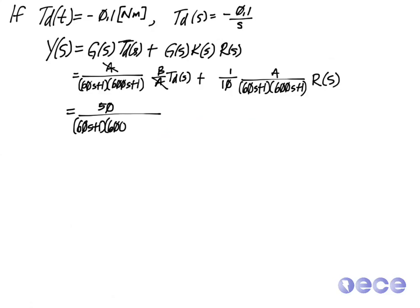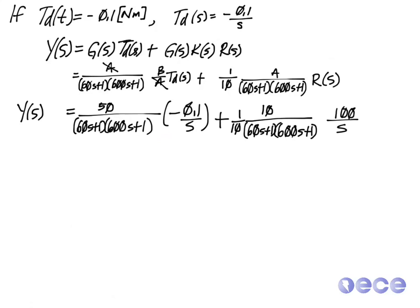So that R of S again is still going to be 100. T of S, T of S as you recall was minus 0.1 over S, the step input. And then 100 over S is my step input for R. So again, I've just added in the values that we selected for our various step inputs.